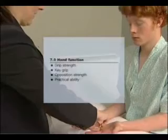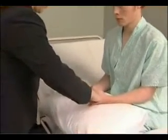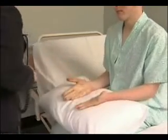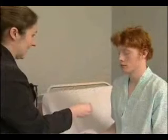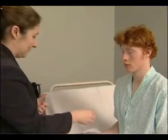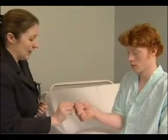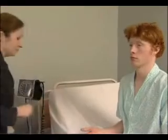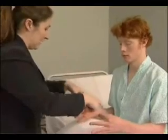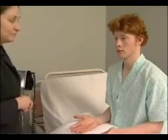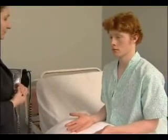Now test hand function. First, grip strength is tested by getting the patient to squeeze two of the examiner's fingers — grip my fingers very tightly and don't let me pull them out. Key grip is the grip with which a key is held between the pulp of the thumb and forefinger — take this key and turn it as hard as you can. Opposition strength is where the patient opposes the thumb and individual fingers; the difficulty with which these can be forced apart is assessed. Finally, a practical test such as asking the patient to undo a button or write with a pen.